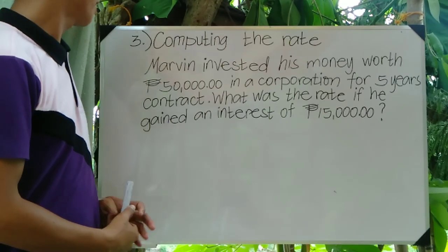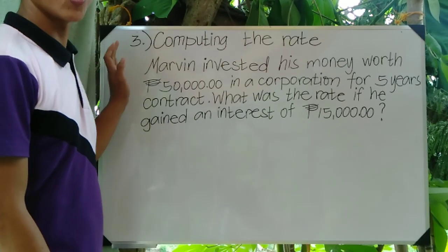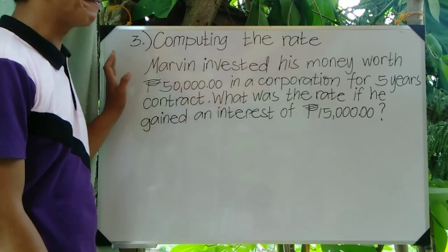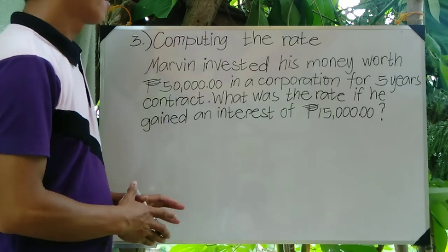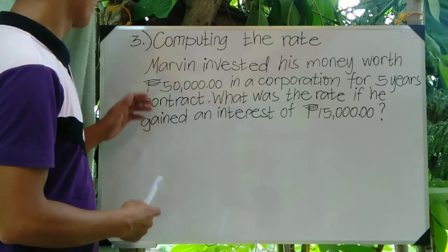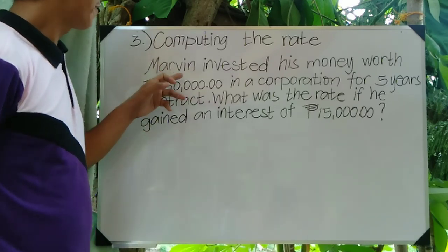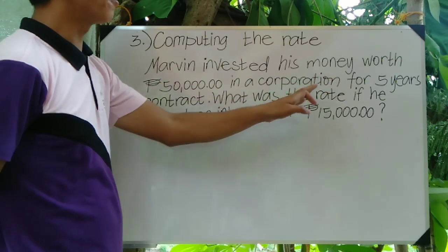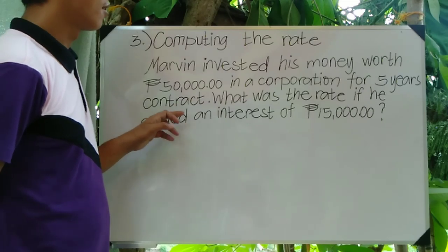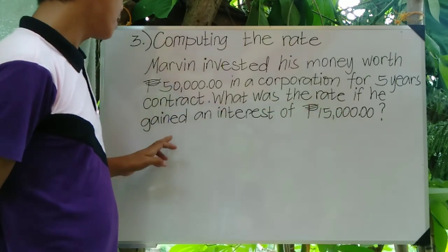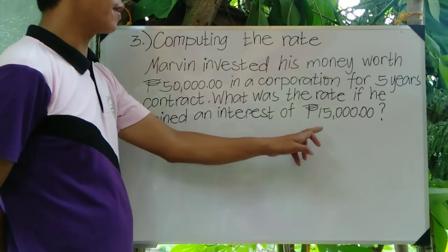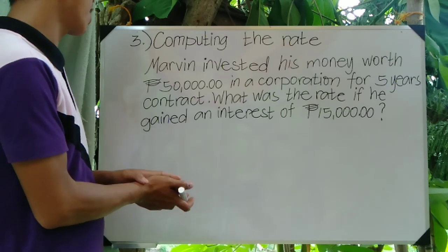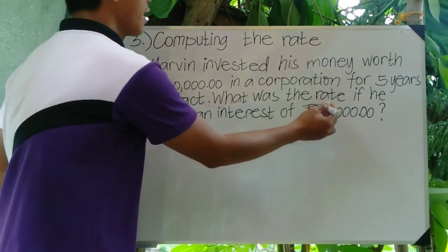Let's proceed to problem number three — computing the rate. The problem: Marvin invested his money worth 50,000 pesos in a corporation for a five-year contract. What was the rate if he gained an interest of 15,000 pesos? What we are looking for is the rate.